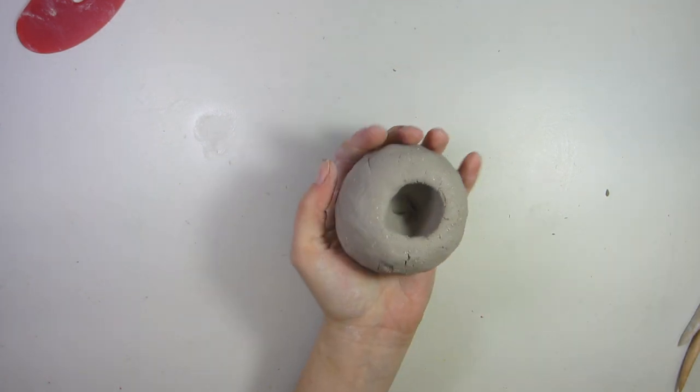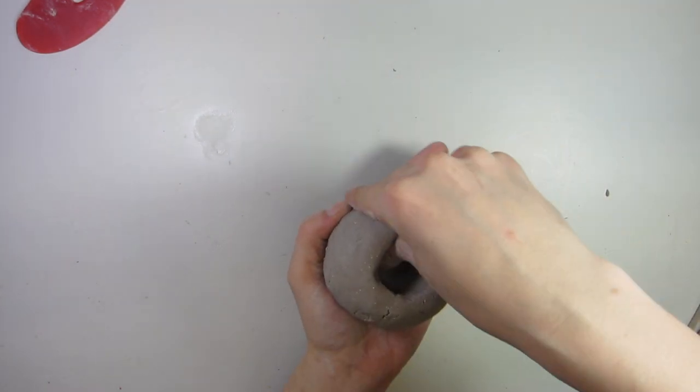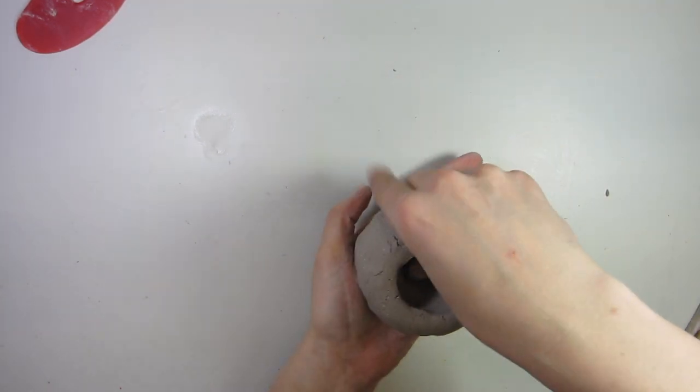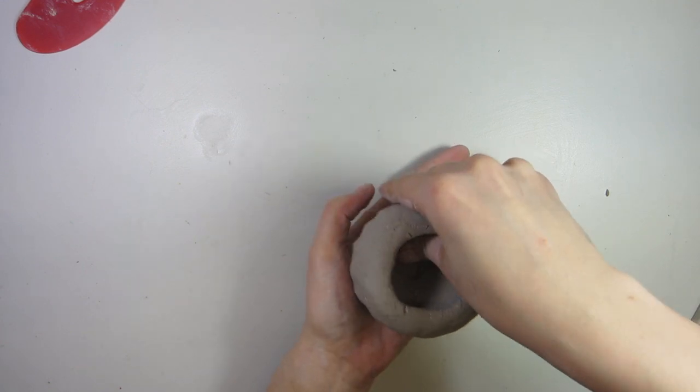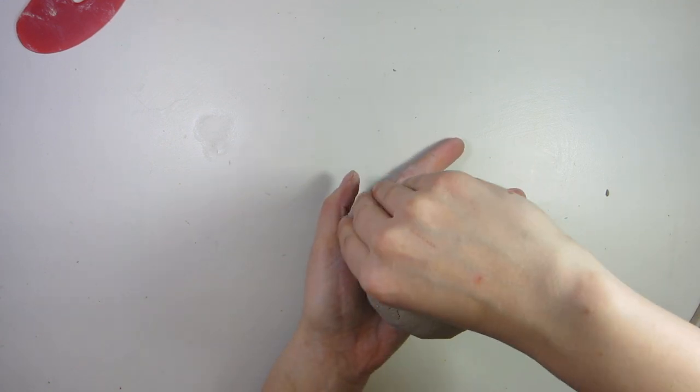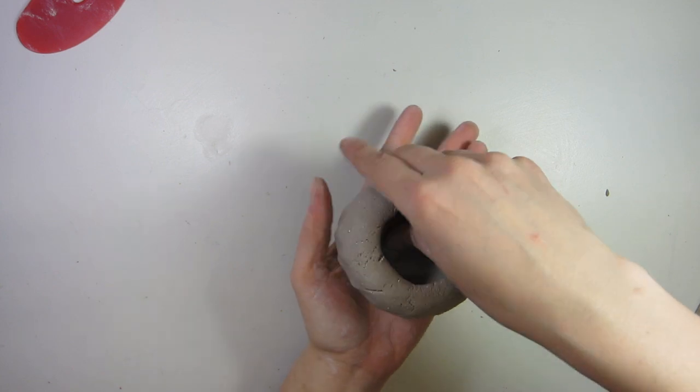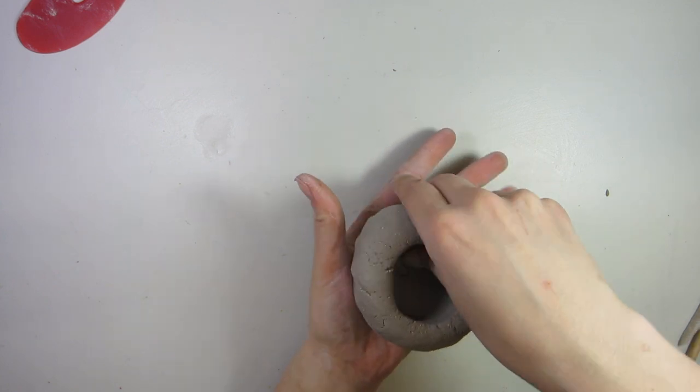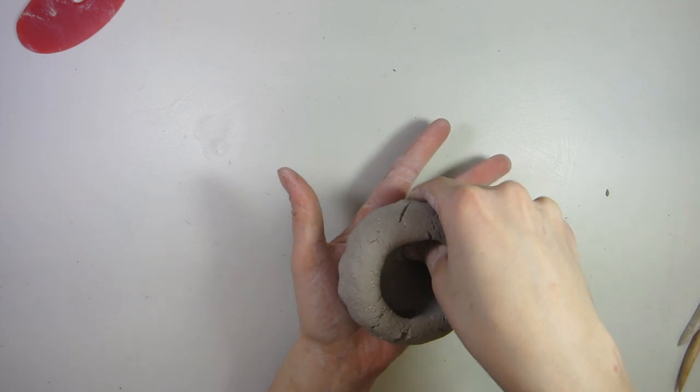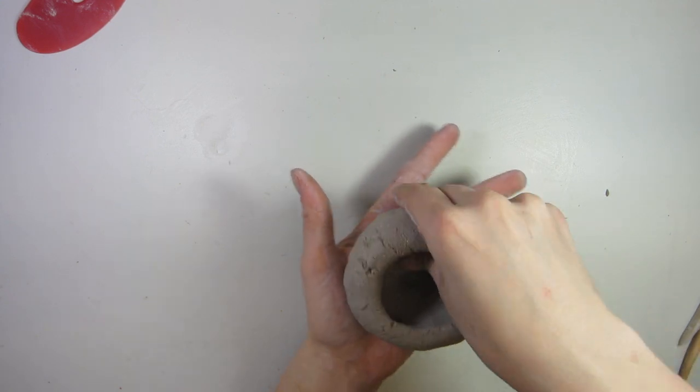But to make a nice pinch pot, we take our alligator fingers and we open it up, slowly rotating it. As I pinch, I'm also turning it as you may see. So I pinch and pull just a little, pinch, pull a little, pinch, pull a little, and I rotate it again.